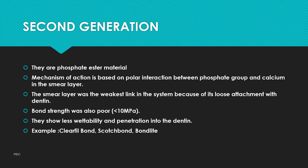Second generation: they are phosphate ester materials. The mechanism of action is based on the polar interaction between the phosphate group and the calcium in the smear layer. The smear layer was the weakest link because of its loose attachment with the dentin. Bond strength was also poor, less than 10 MPa. They show less wettability and penetration into the dentin. Examples: Clearfil Bond, Scotchbond.